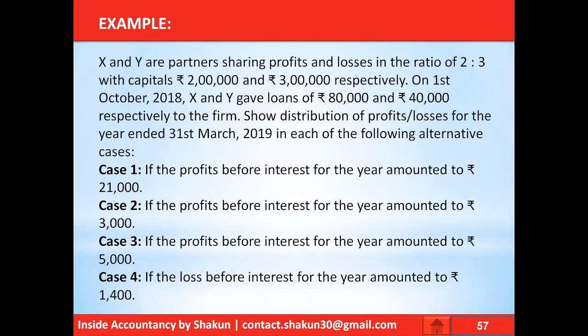Let's take an example. X and Y are partners sharing profits and losses in the ratio of 2:3, with capitals of 2 lakh and 3 lakh respectively. On 1st October 2018, X and Y gave loans of 80,000 and 40,000 respectively to the firm. Show the distribution of profits or losses for the year ended 31st March 2019 in each of the following cases: Case 1 — profits before interest are 21,000; Case 2 — 3,000; Case 3 — 5,000; Case 4 — 1,400.